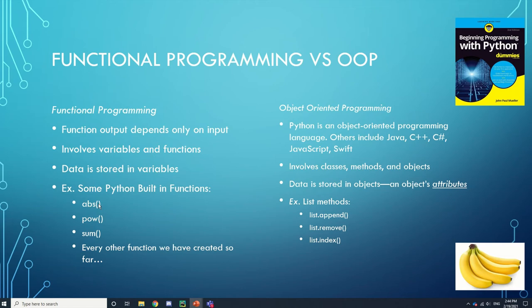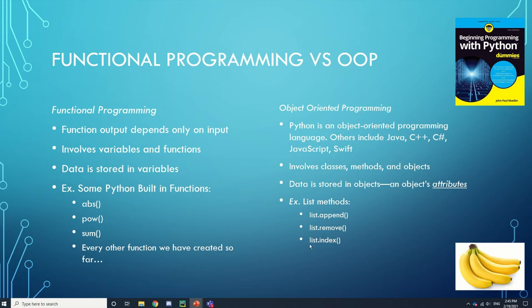When you call a method, the output depends on the object you call it on. For example, index() will give you a different value for each different list. If you have a list of integers, the number zero could be at the beginning, end, or middle of the list — your output for this method is going to differ depending on the object you call it on.